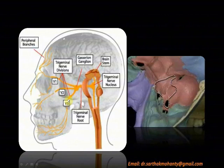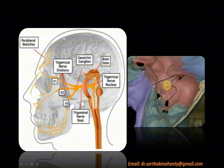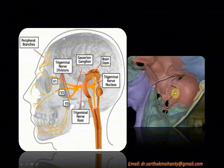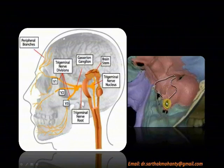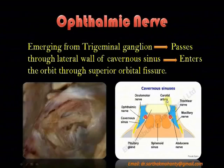Here is the trigeminal ganglion, also called the gasserian ganglion, which divides into an ophthalmic branch, a maxillary branch, and a mandibular branch. This ganglion is placed in a cave-like depression called the cavum trigeminale. The ophthalmic branch leaves the cranial cavity by the superior orbital fissure, the maxillary branch by the foramen rotundum, and the mandibular branch by the foramen ovale.